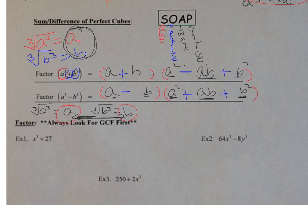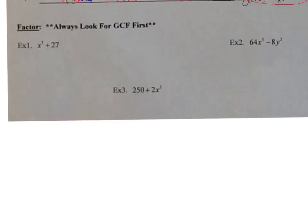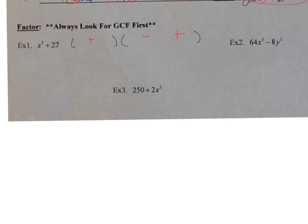Let's look at our first example. We have the sum of perfect cubes — it's a plus. Set up two parentheses. Using SOAP: first sign is the same (positive), next is opposite (minus), last is always positive. Take cube roots: cube root of x³ is x, and cube root of 27 is 3.